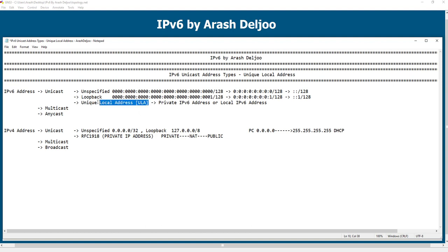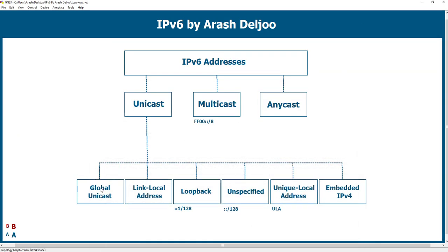We use Unique Local Addresses, or ULA, only inside our networks. We can use them to send traffic from one system to another, similar to how global unicast addresses work in IPv6 — which are the public IPv6 addresses — but ULA should be used only inside our network. You can use NAT in IPv6 to communicate between the unique local address range and the public internet.